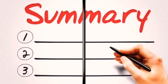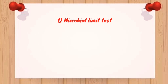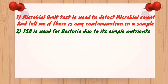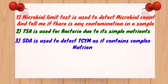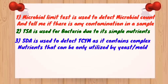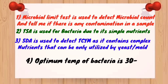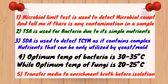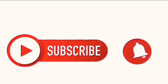To summarize: microbial limit test is used to detect microbial count and determine if there is any contamination in the sample. TSA (tryptone soybean agar) is used to detect total aerobic bacteria, as it contains simple nutrients easily utilized by bacteria. Sabouraud dextrose agar is used to detect total combined yeast and mold count, as it contains complex nutrients only analyzable by the enzymatic action of yeast and mold. Optimum temperature for bacteria is 30 to 35 degrees Celsius, while optimum temperature for fungi is 20 to 25 degrees Celsius. To detect any pathogenic microorganism, you must inoculate it into enrichment broth before transferring to selective media. Thanks for watching, please like the video and subscribe to the channel.